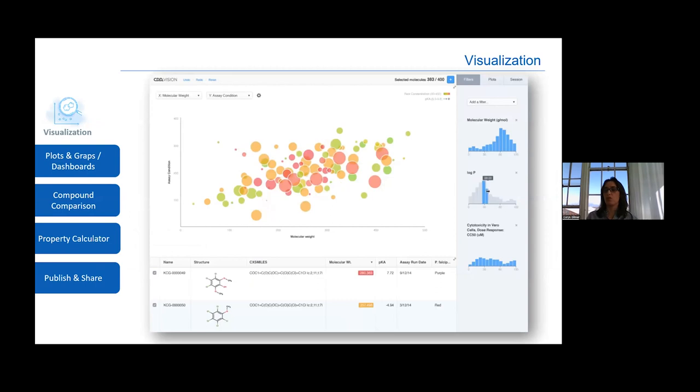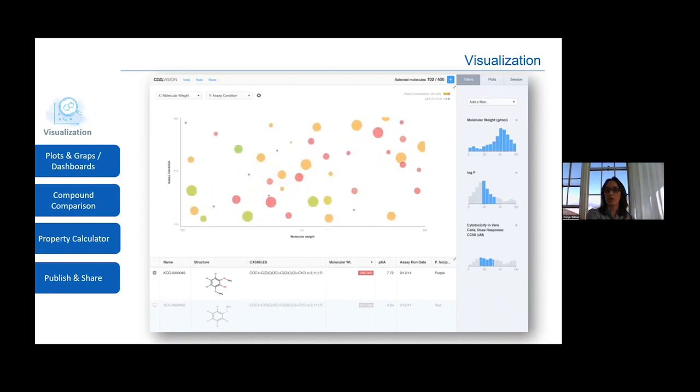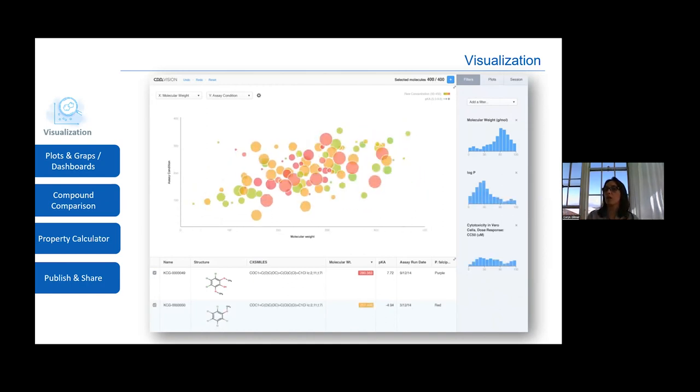The third module is visualization. Visualization is a very dynamic tool, and this is actually where analysis happens. Based on the data that you have entered in the entity registration system, you plot your graphs and you look at your molecules, outliers, or what are the most promising molecules, what are bad molecules.